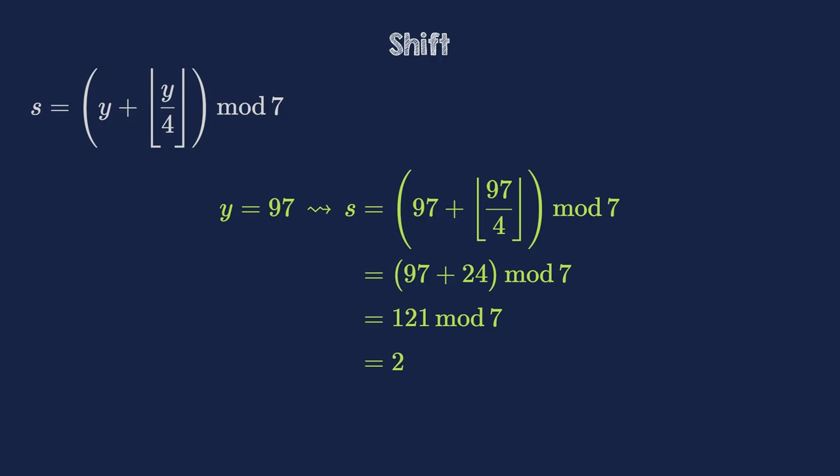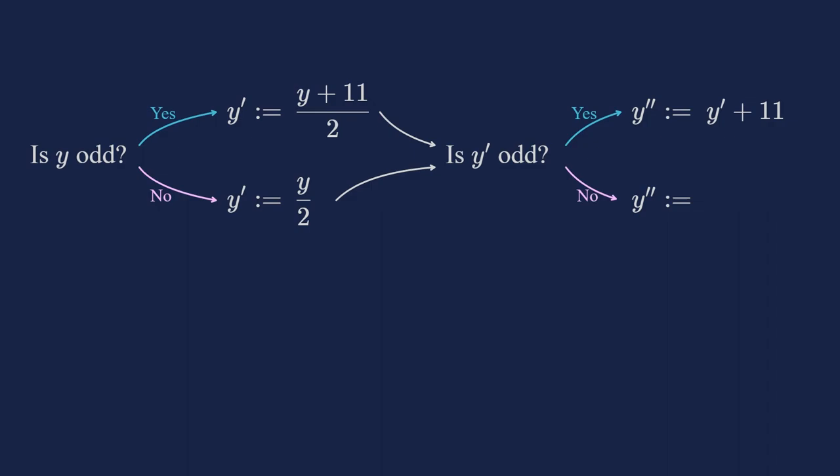But here I want to show you a formula that is in and of itself more complicated, but much easier to do mentally. And it's not the one Conway came up with. He did something that involves dividing by 12, which is arguably already easier than this. However, I don't like it that much. Instead, I will show you a formula found by Chamberlain Fong and Michael Walters in 2010. We still want to know what y plus y divided by 4 rounded down is. But instead of computing it directly, we perform the following steps. Is y odd? If yes, define a new number y prime as y plus 11 and then divide it by 2. If no, define y prime as y directly divided by 2. Next, is y prime odd? If yes, define a new number y2 prime as y prime plus 11. If no, define y2 prime as the same as y prime. Then the shift s we are looking for is minus y2 prime mod 7. This is called the odd plus 11 rule for pretty obvious reasons.